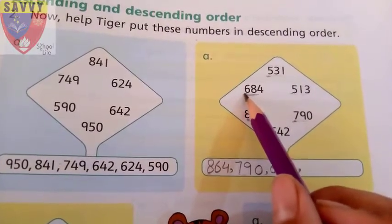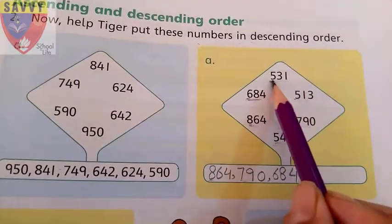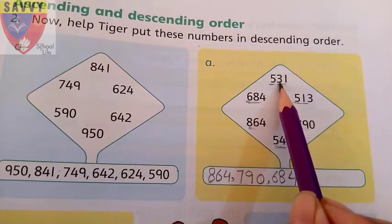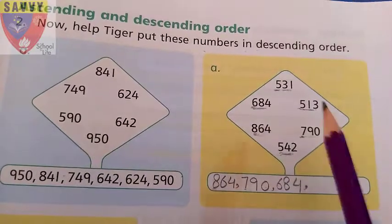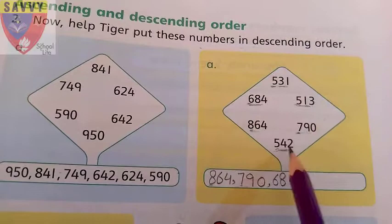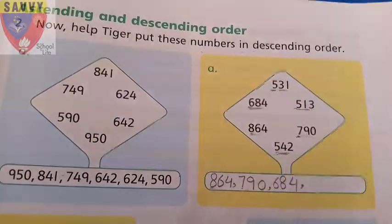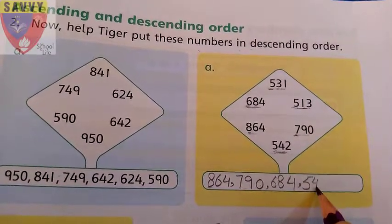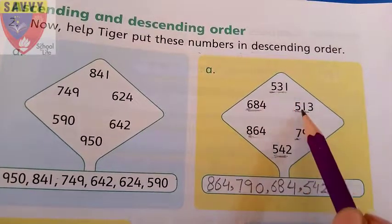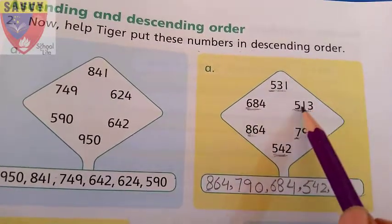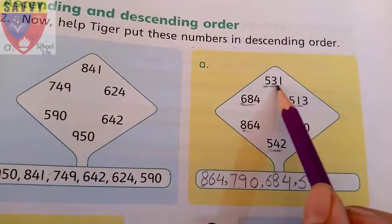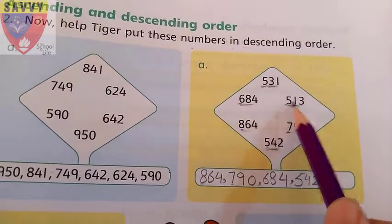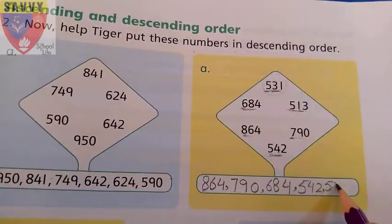What comes before 6? Five. We have three values with 5 in the hundreds: 531, 513, and 542. We check their tens and ones: 31, 13, and 42. Which is biggest? 42 is bigger than 31 and 13, so we write 542 first among the 500s. Then comparing 31 and 13: 531 is greater than 513, so we write 531, then 513 last.